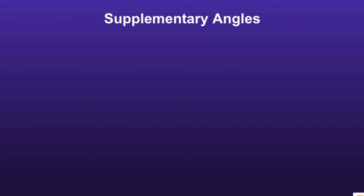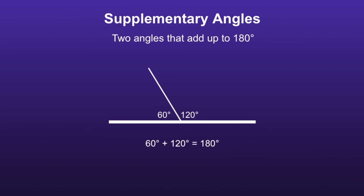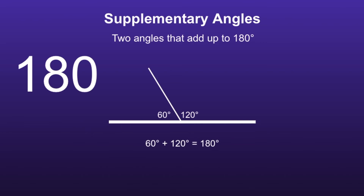Supplementary angles are two angles that add up to 180 degrees. To remember this, if we write the number 180, there's actually a hidden S right in the 8, which lets us know that supplementary angles add up to 180.